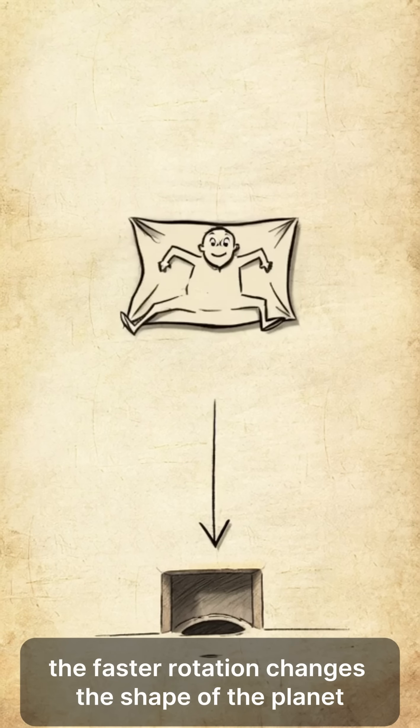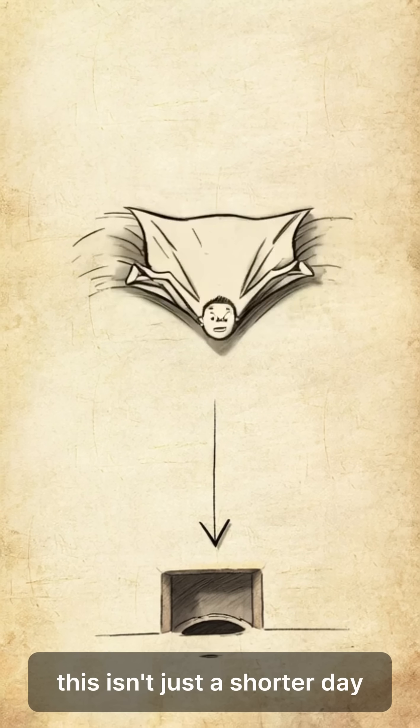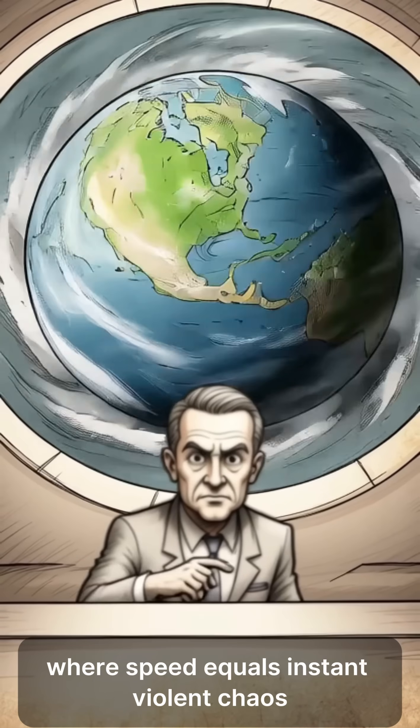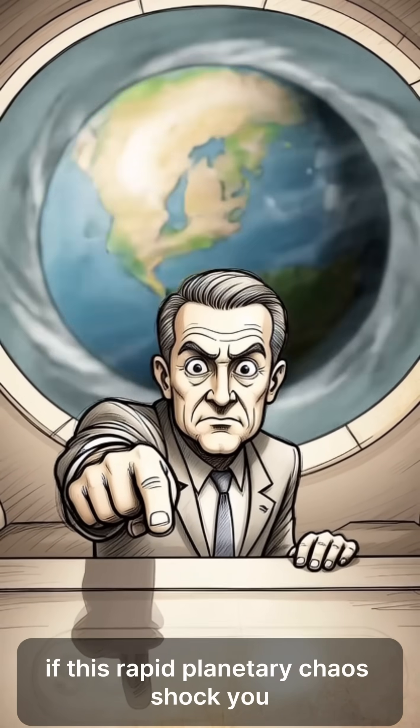The faster rotation changes the shape of the planet, shifts the crust, and alters our magnetic field. This isn't just a shorter day, it's a complete planetary transformation where speed equals instant violent chaos.